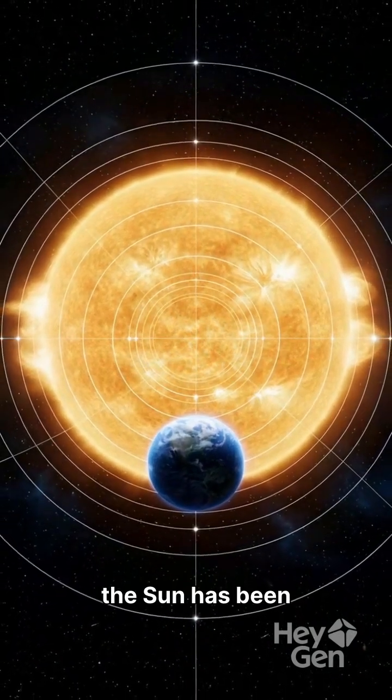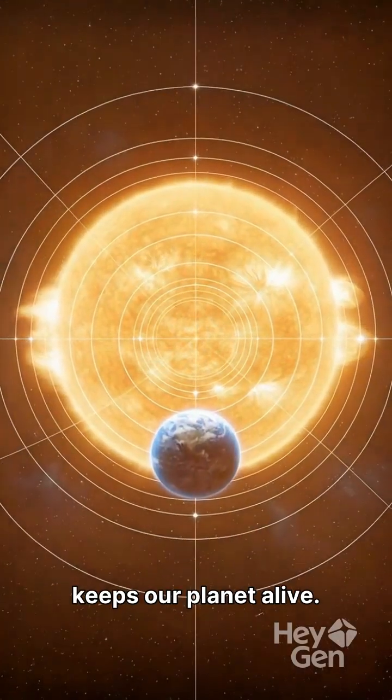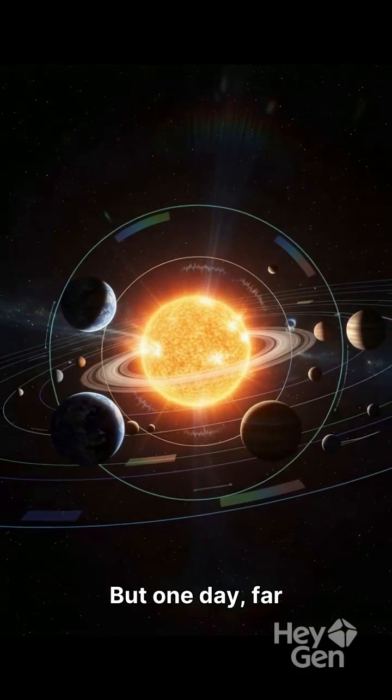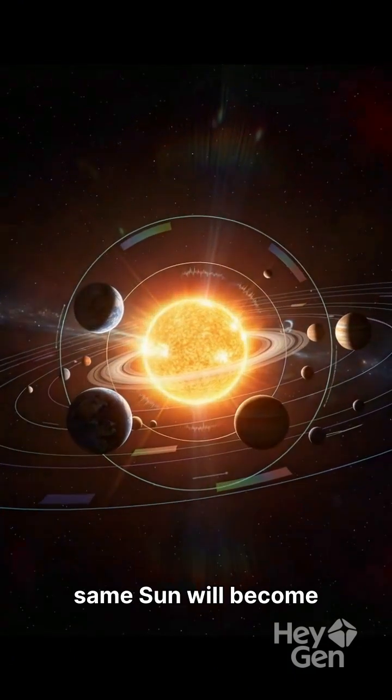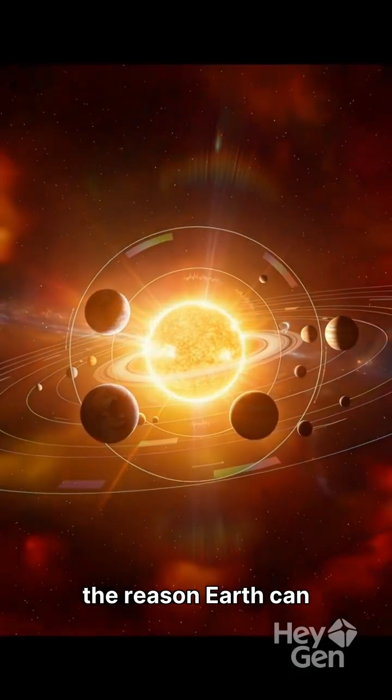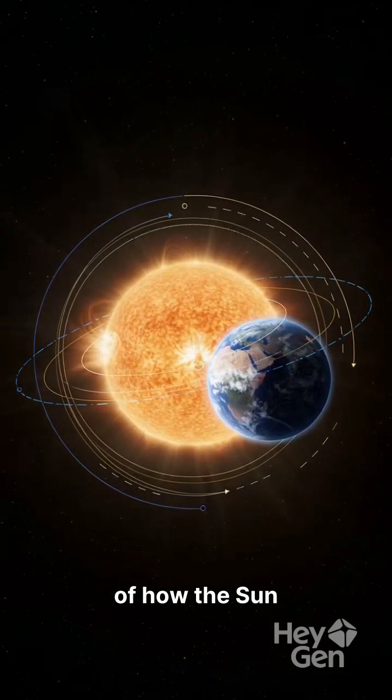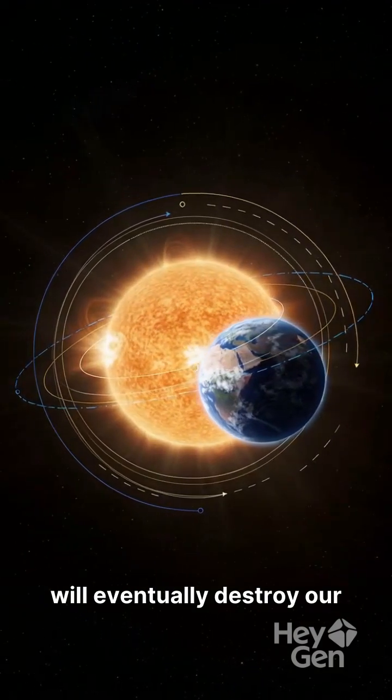For billions of years, the Sun has been the powerful engine that keeps our planet alive. But one day, far in the future, this same Sun will become the reason Earth can no longer survive. This is the story of how the Sun will eventually destroy our world.